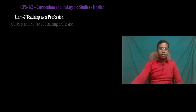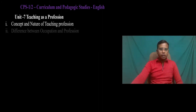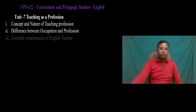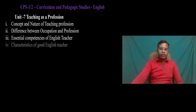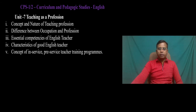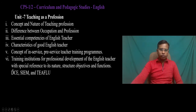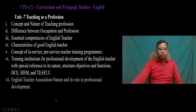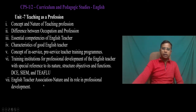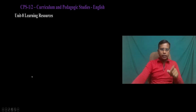Unit 7 is Teaching as a Profession. We have to study the concept and nature of teaching profession, difference between occupation and profession, essential competencies of an English teacher, characteristics of a good English teacher, concept of in-service and pre-service teacher training programs, and training institutions for professional development of the English teacher — such as DCE, SIM, and TIPFLOW — with reference to their nature, structure, objectives, and function. We also have to study English teacher associations, their nature, and their role in professional development.